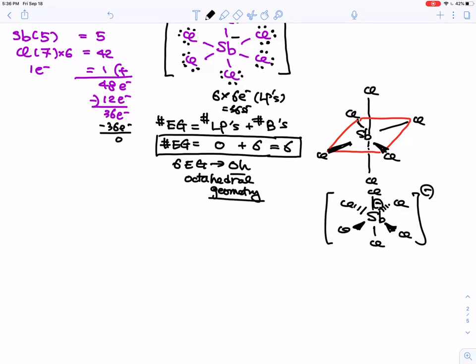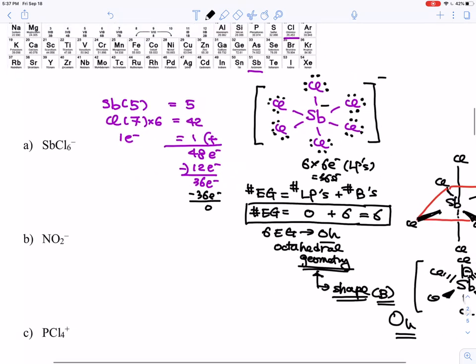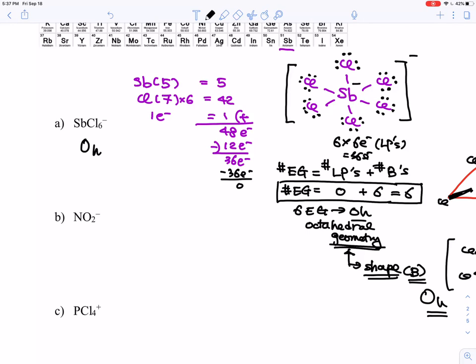So now, this is the geometry. What about the shape? Shape is based on the bonding only. Here is a case, actually, everything is bond. All the electron groups are bond. So this one does have the same geometry and same shape, which is octahedral. Octahedral shape. So that's the first answer for this one is an octahedral. So octahedral shape for this molecule.